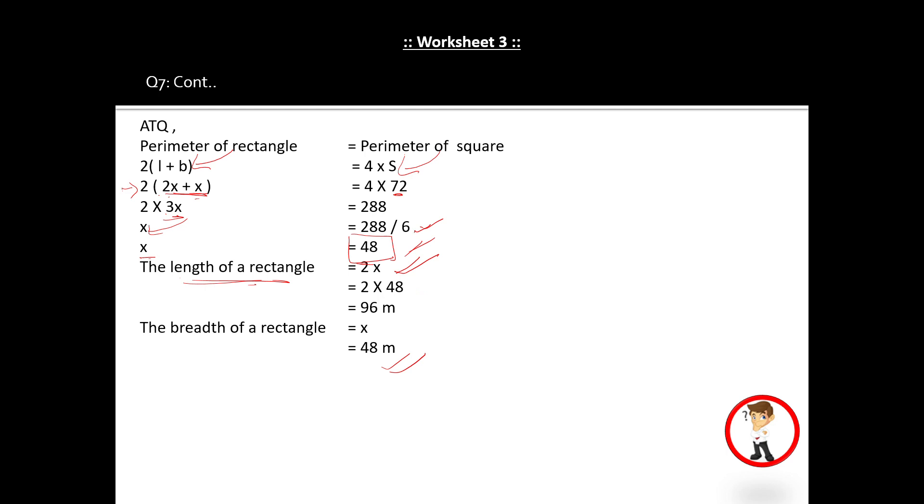But the question is not finished yet. They have asked for the area of the rectangular field. What is the formula? Area equals L times B. Substitute the values of L and B from above. Multiply them together to get the final answer: 96 times 48 equals 4608 square meters. Students, this question is very important. Thank you.